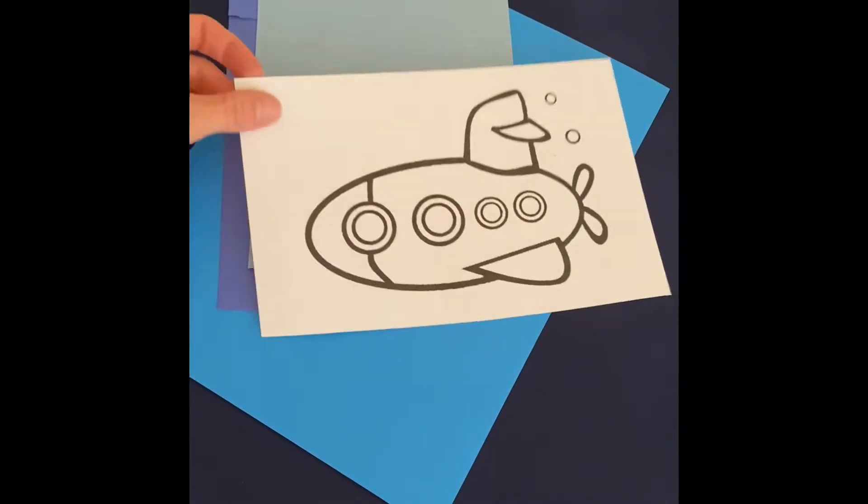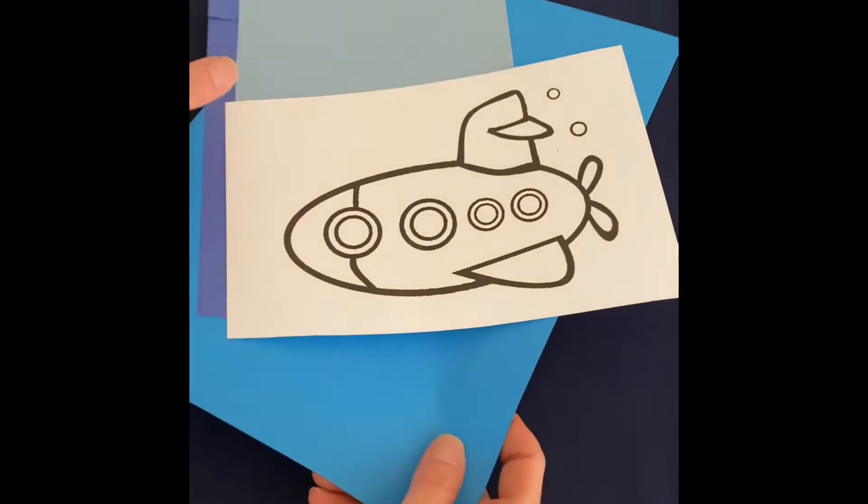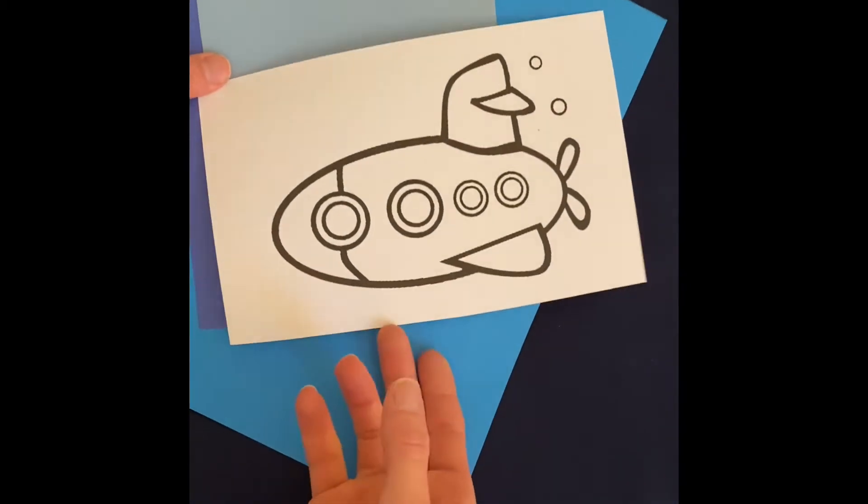Hey families! Today we're going to be making our submarines. From your bag you have this picture of a submarine and these three pieces of glue paper. This is a two-step craft project.